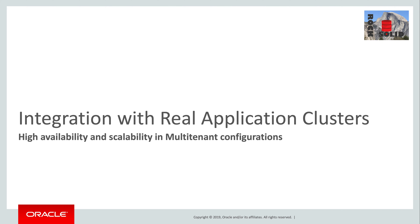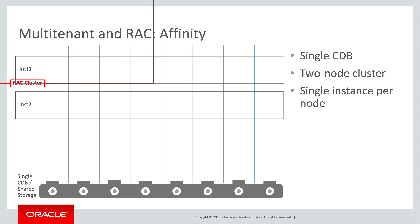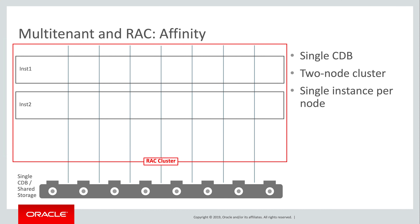Multitenant is closely integrated with Oracle Real Application Clusters, also known as RAC. RAC is an architecture that provides great scalability as well as great availability, the theme of this series. In this video, we'll see both of these benefits. Let's start by setting up a basic two-node RAC cluster for a single CDB.